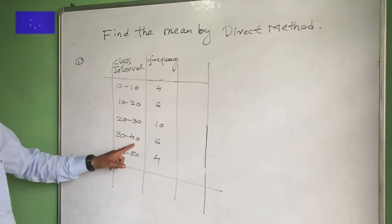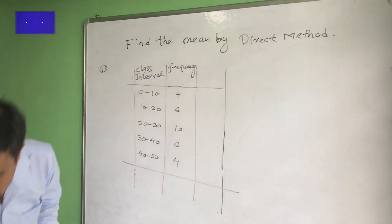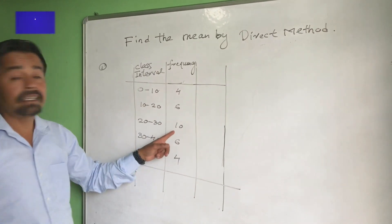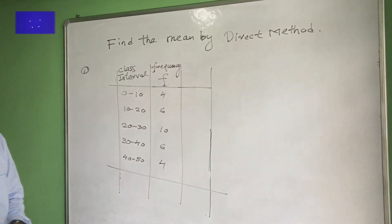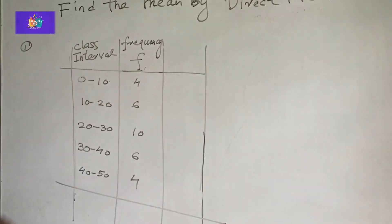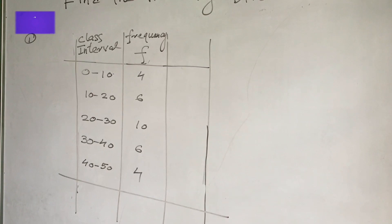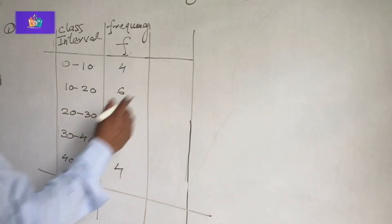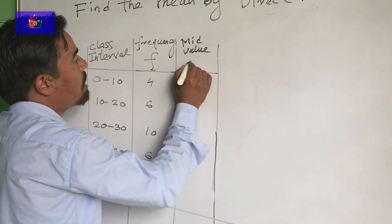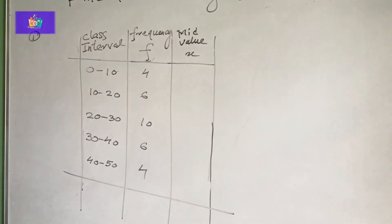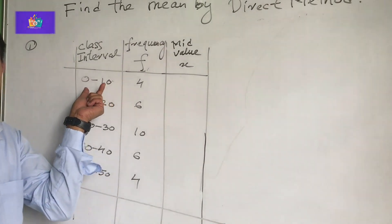The class intervals are 20 to 30, 30 to 40, 40 to 50. Frequencies are 4, 6, 10, 6, 4. Now for the direct method we need the lower class boundary and upper class boundary. The mid value is X. The mid value equals lower class boundary plus upper class boundary divided by 2.